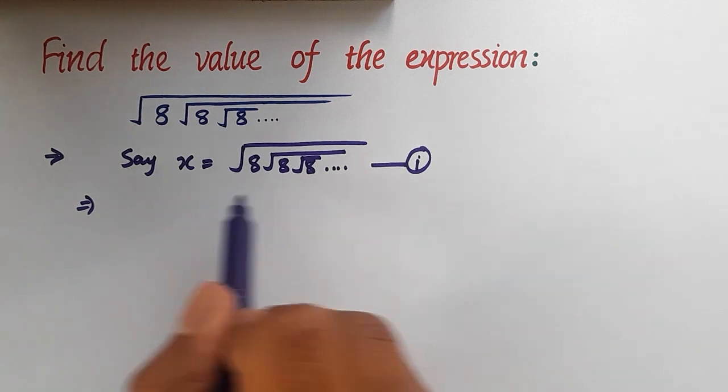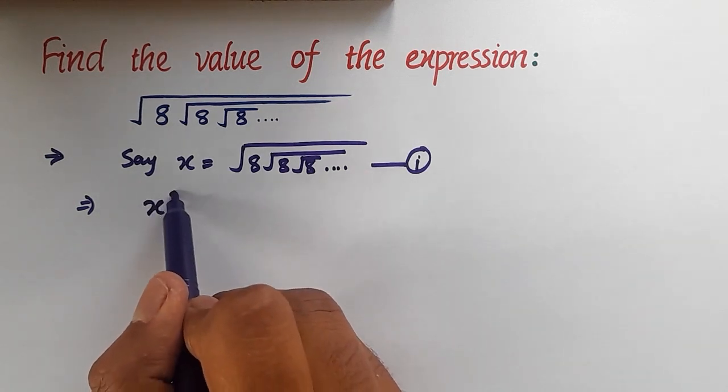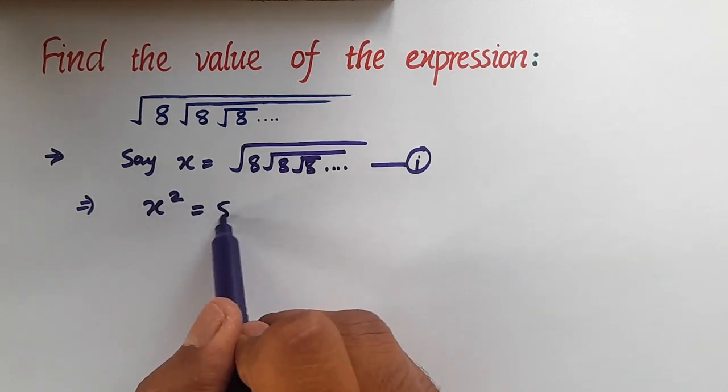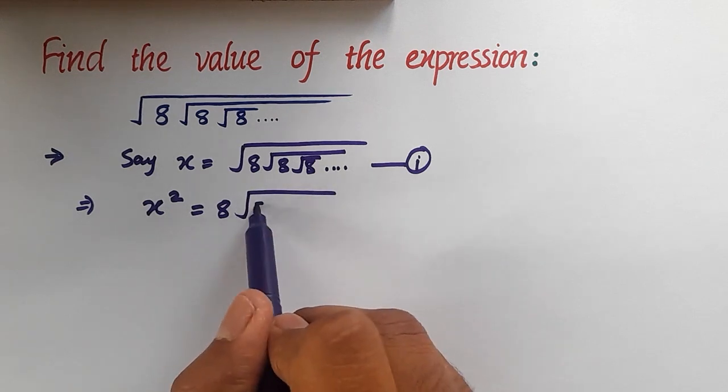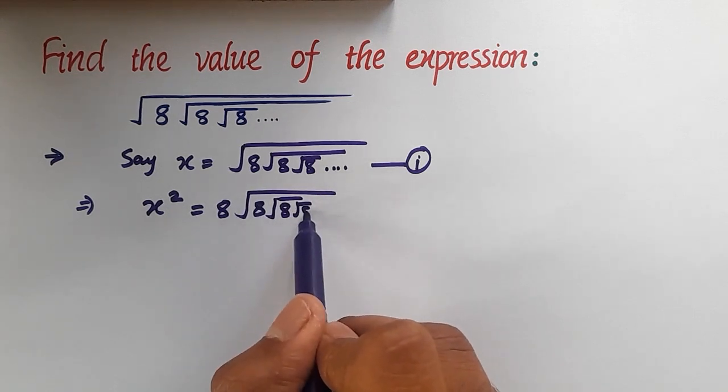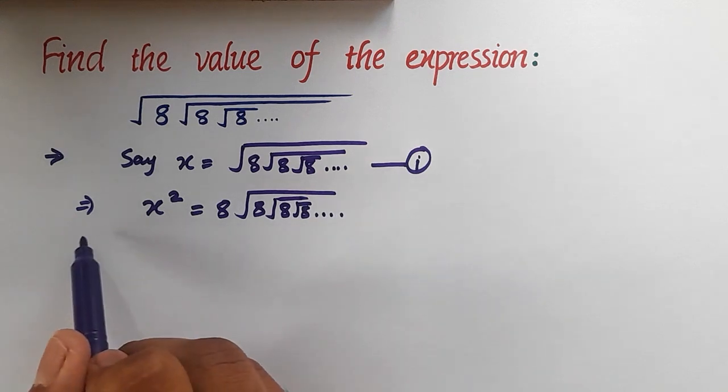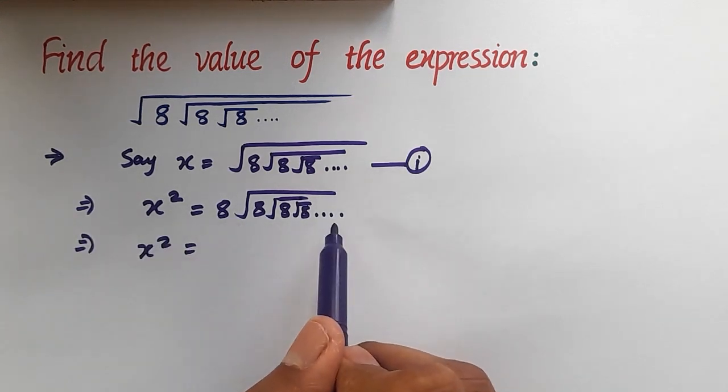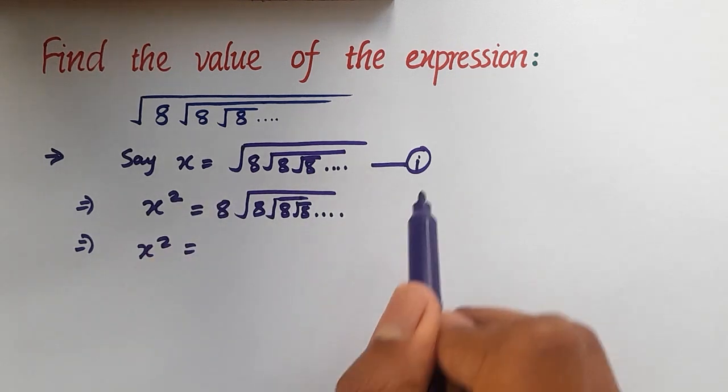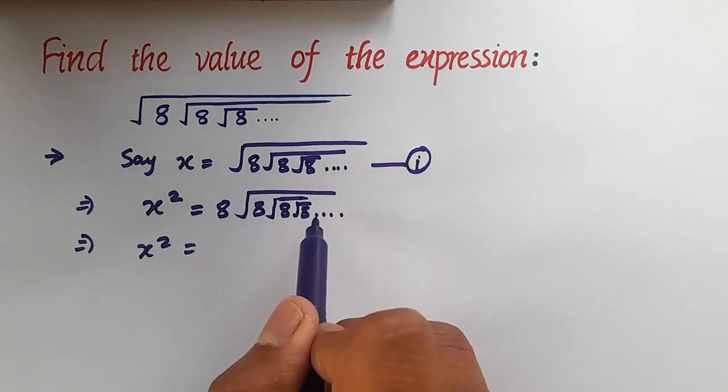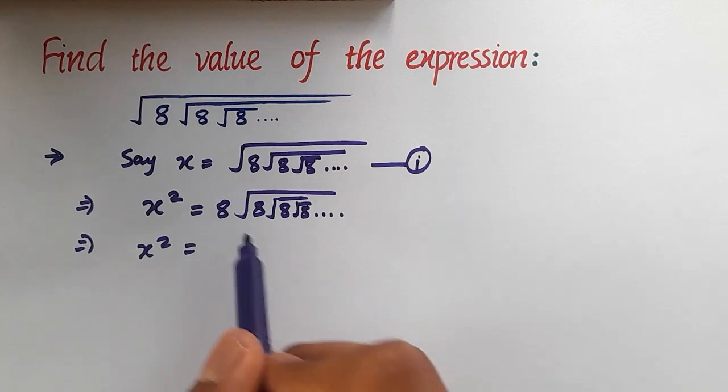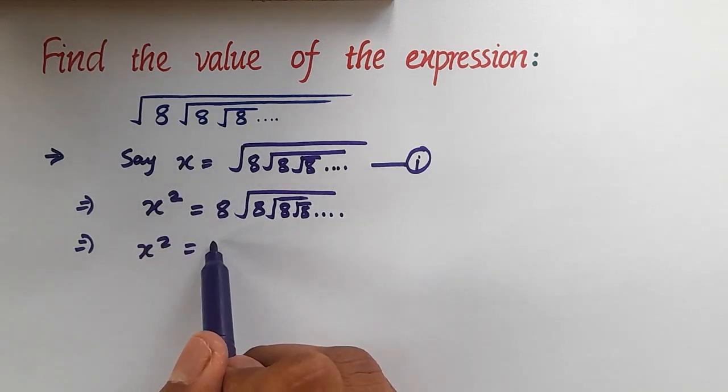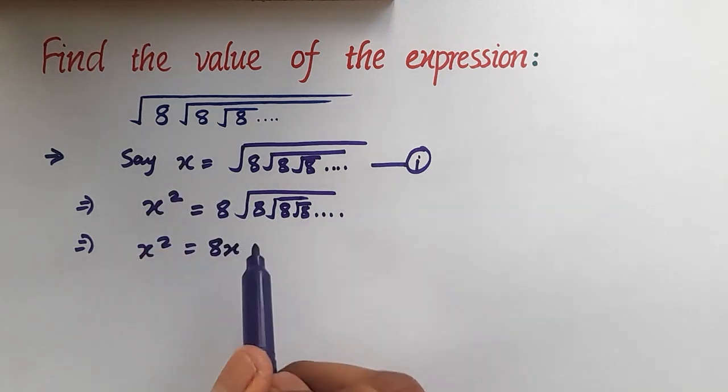On squaring equation 1, we will have x squared is equal to 8, under root 8, under root 8, under root 8, and so on. Notice that this value is nothing but x here, which is equal to the same value in equation 1. So we can replace the value here and write it as x squared is equal to 8x.